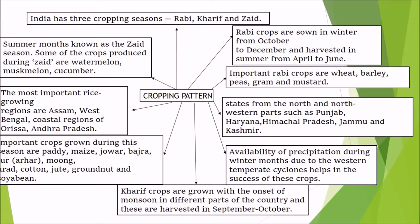India has three cropping seasons: Kharif, Rabi, and Zaid. The Kharif season starts with the onset of monsoon and crops are harvested from September to October. Major Kharif crops include paddy, maize, jowar, bajra, tur, moong, urad, cotton, jute, groundnut, and soyabean. The most important rice-growing regions are Assam, West Bengal, and the coastal regions of Orissa and Andhra Pradesh.